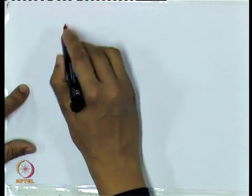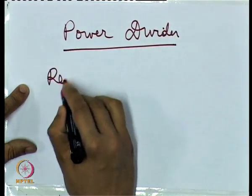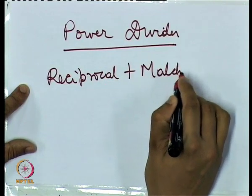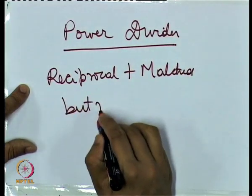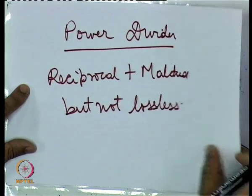The third category of 3-port devices is reciprocal and matched at all ports but not lossless — that kind of device is called a power divider. It is reciprocal plus matched but not lossless. Power divider is a well-known circuit; a simple resistive network can provide power division. Let us see a simple resistive power divider.